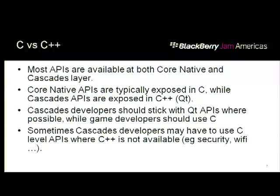If you're writing an app, the core native layer exposes C functions, while Cascades exposes Qt-based functions. As a rule of thumb, if you're a Cascades developer, look to the Cascades and Qt APIs first. If you're a game developer, use the C APIs. Certain functionality like security and crypto APIs are written in C, so in some cases you may have no choice.